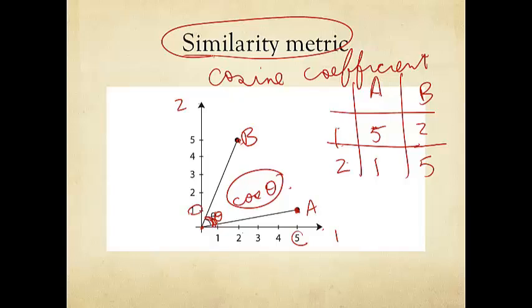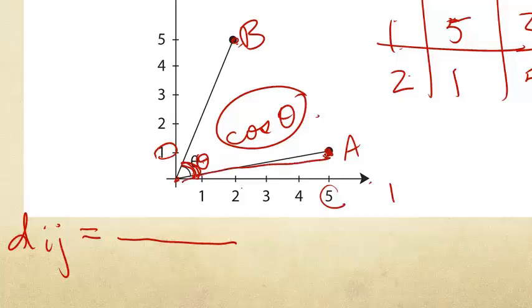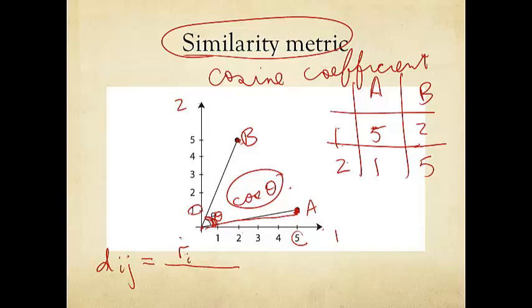So how do we write down the cosine coefficient here? I'm going to say the cosine coefficient between two movies ij is called Dij. And if you remember from basic analytic geometry, it's really this point viewed as a vector from origin to that point. Call that vector Ri transpose Rj, that is this point viewed as a vector from the origin to that point, divided by the normalizations. That is the size of i, L2 norm, and the size of j, also L2 norm. So we can view these two ratings for two different movies as two vectors, Ri and Rj, and the cosine of the angle is the standard formula, which is just the inner product normalized by the size.